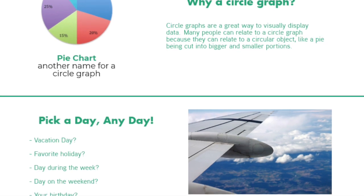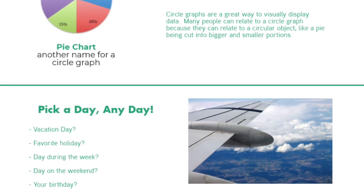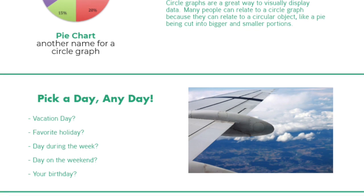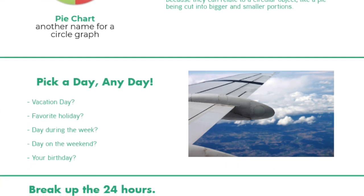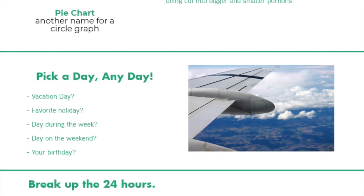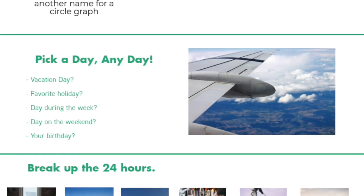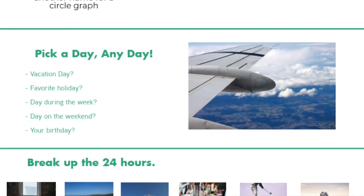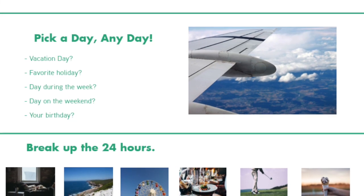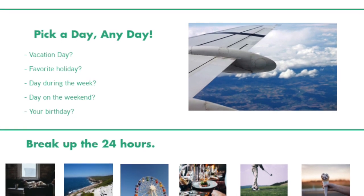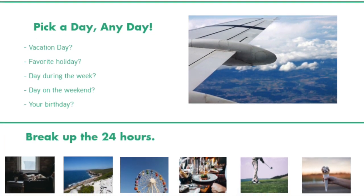Just like bar graphs and line graphs, pie charts are a great visual aid to be used when displaying data. Pie charts are often very popular with displaying data because most people can relate to a circular object like that of a pie being cut into bigger and smaller portions. It's a nice quick way to get a gauge on what the particular data represents.